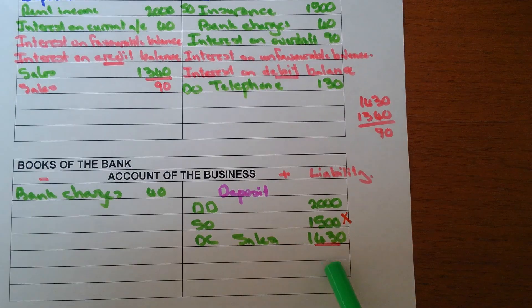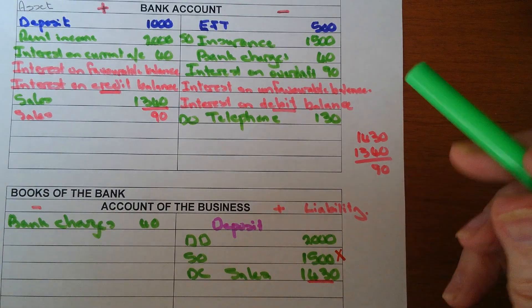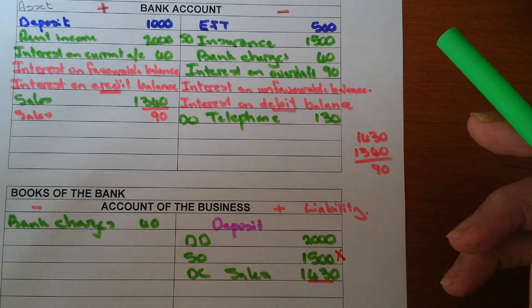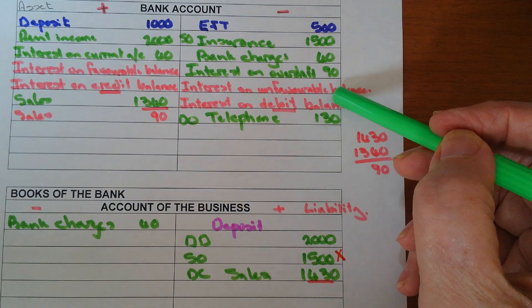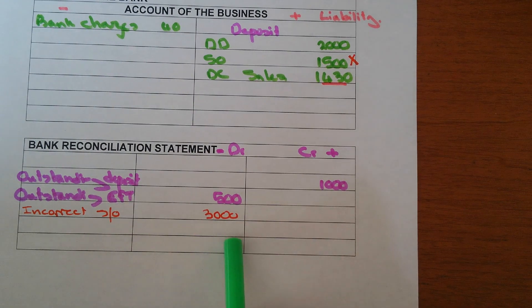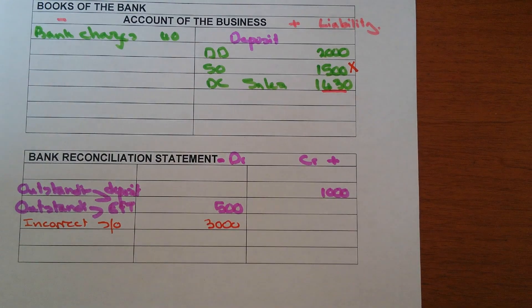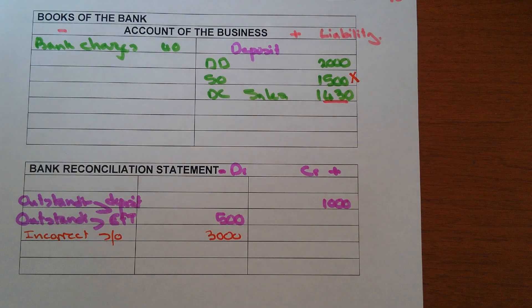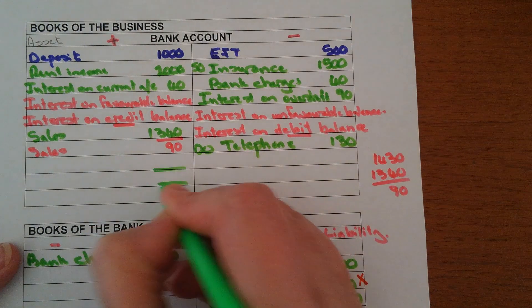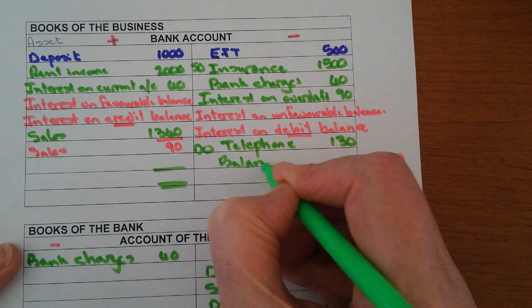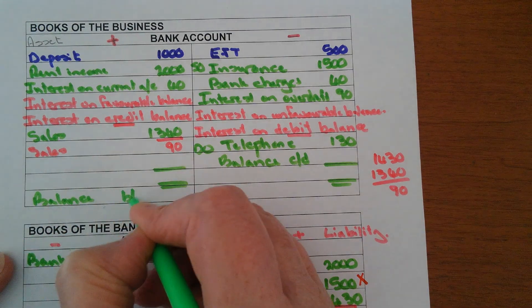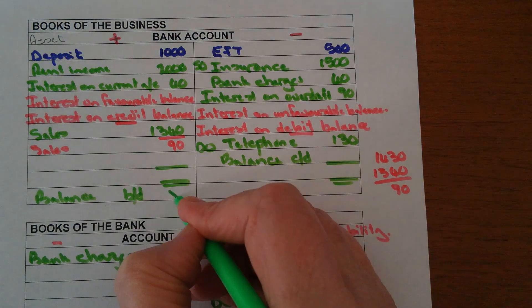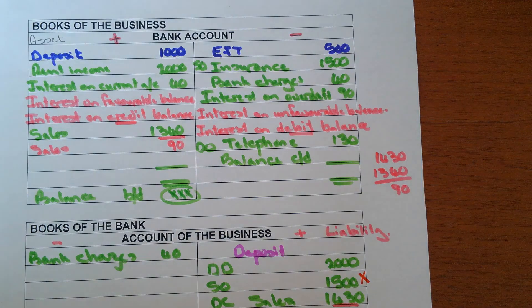To complete a bank reconciliation: tick off items on the bank statement against your cash receipts and cash payments journal. Any entries we still need to record go in our bank account or cash receipts and cash payments journal. Any entries the bank must still record go in the bank reconciliation statement. After all entries are done, add up the totals — the balance carried down will go into the bank reconciliation statement.